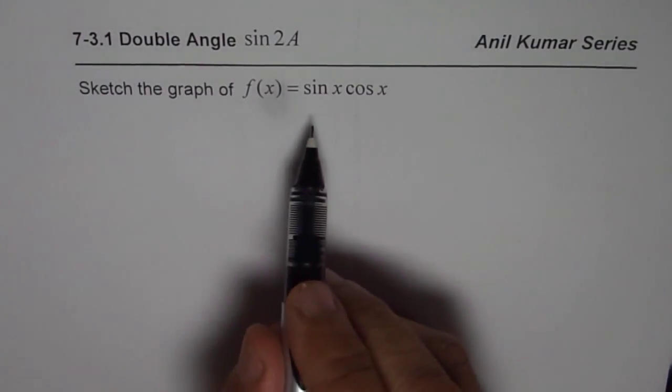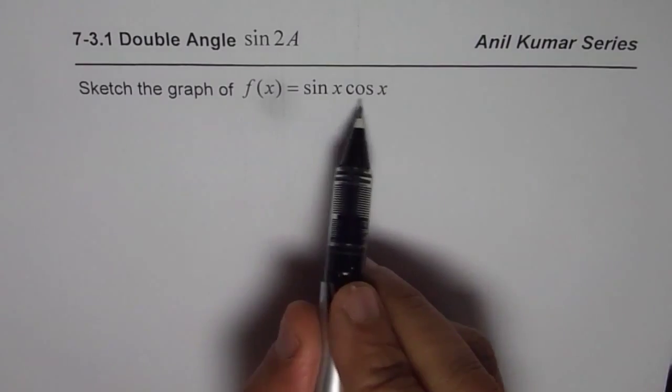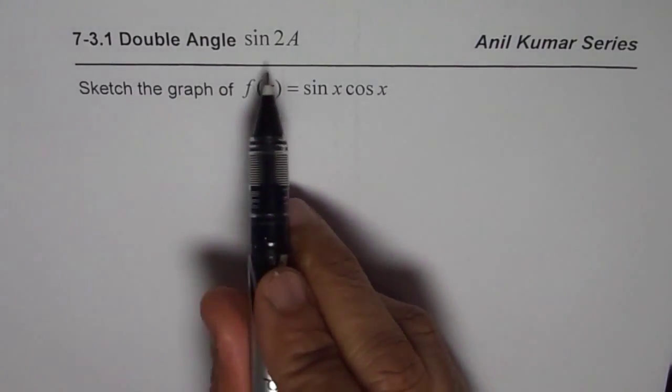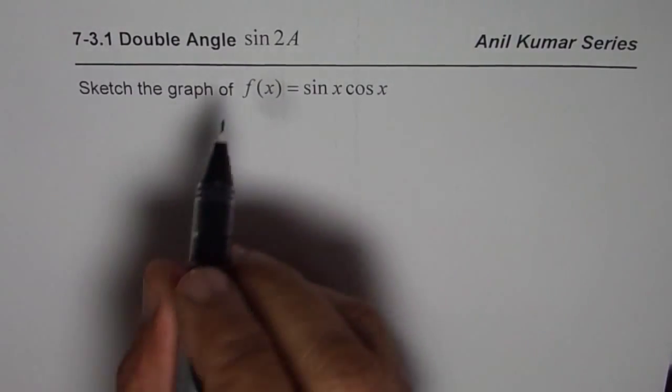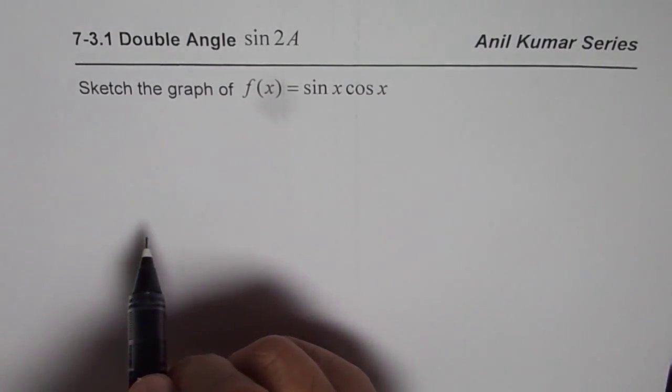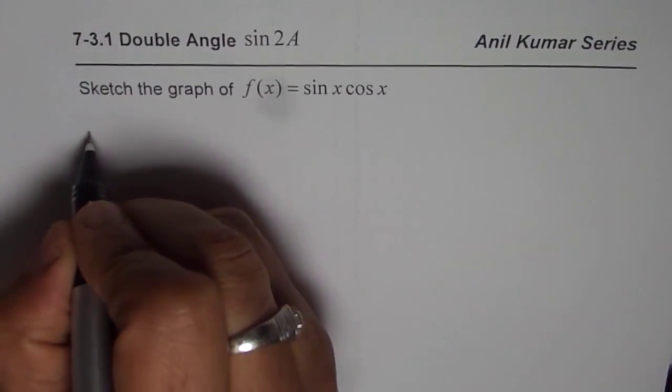Now as such it becomes very difficult to sketch the graph of sine x times cos x. But if you know the double angle formula, that is sine 2x, then it is very simple to sketch. Now let's see how.